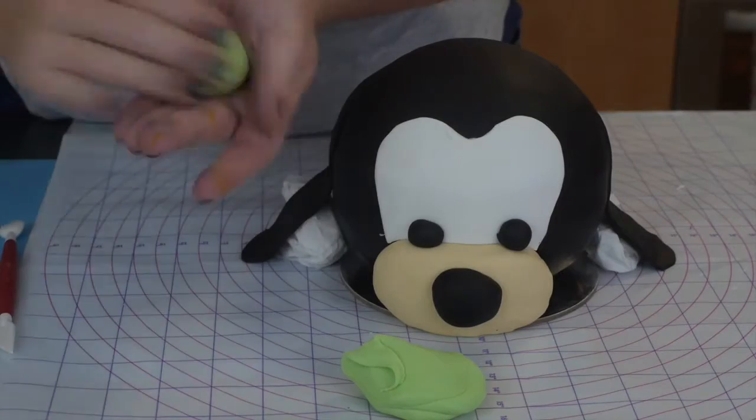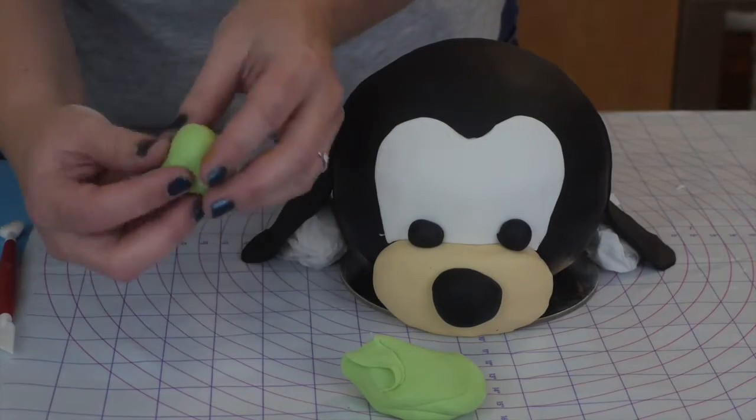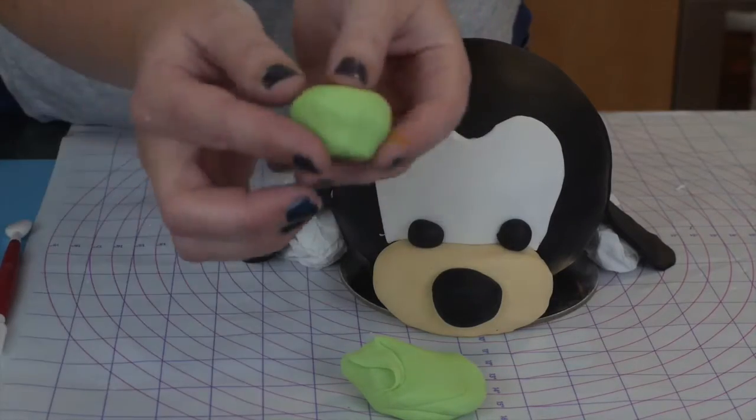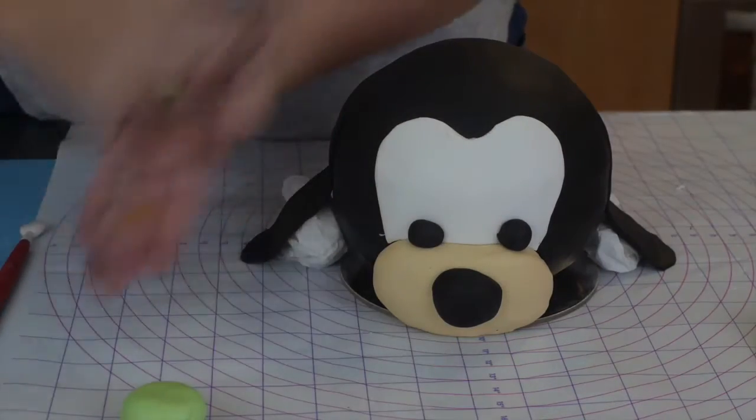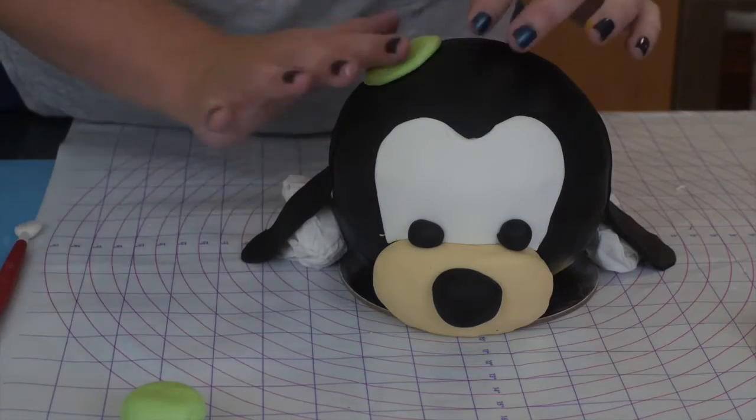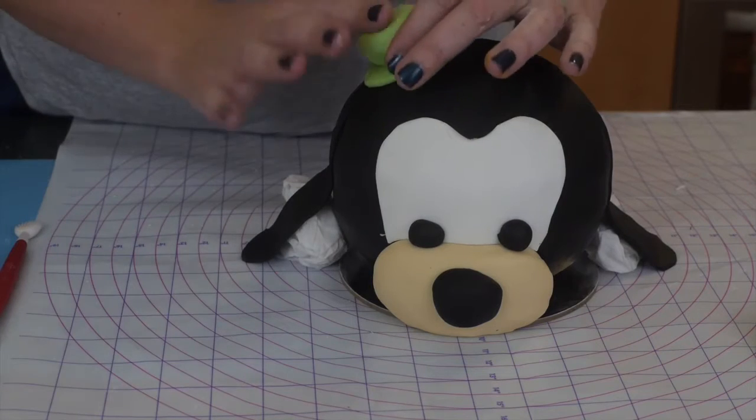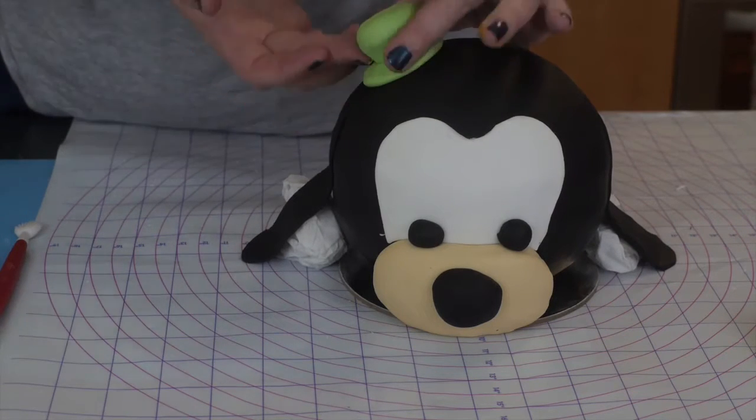Moving on to the hat—get some green fondant. I have actually made this green fondant by using some green and some yellow coloring, and then I have just twisted it into a bit of a toadstool shape. Then getting another piece of green fondant, I'm going to flatten that out and place it just at the top of one of his ears, adding on the top part of the hat that we made earlier.